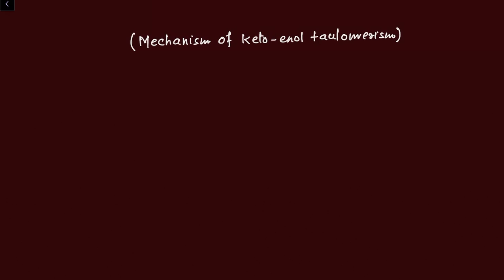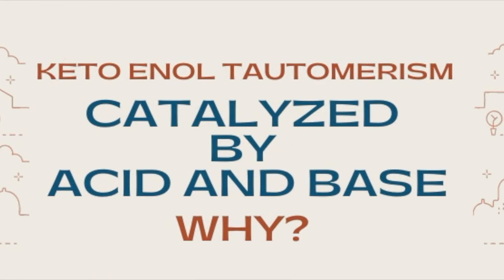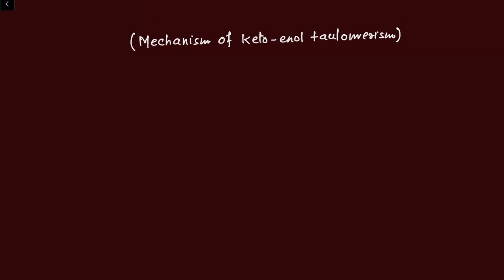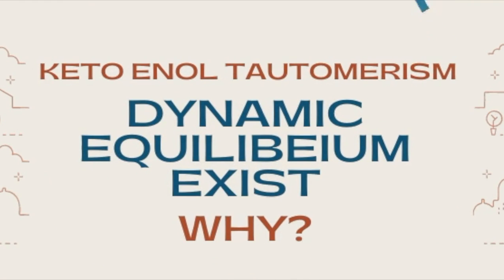Hi everyone, welcome to my channel Big Bang Chemistry, a complete solution of chemistry. In this third series of this video lecture on the mechanism of keto-enol tautomerism, we are going to learn two facts: the first fact is that keto-enol tautomerism are catalyzed by acid and base — why? The second fact is that a dynamic equilibrium exists between the keto and enol forms — why and how?